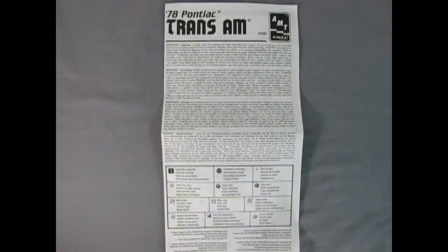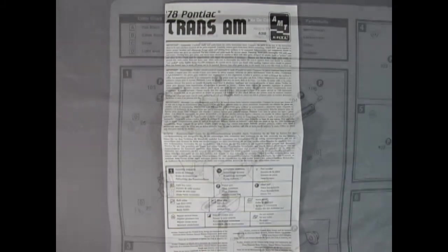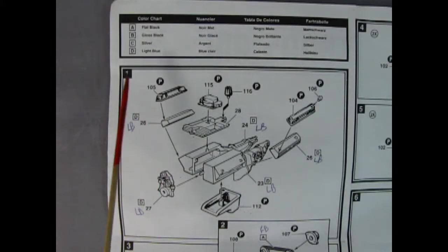Here we have our instruction sheet which is one of those great big foldout styles. We have our important details up here in many different languages as well as all the little symbols we will see as we build the model kit. So just above our first panel we have this nice color chart with all the colors marked by a letter as well.